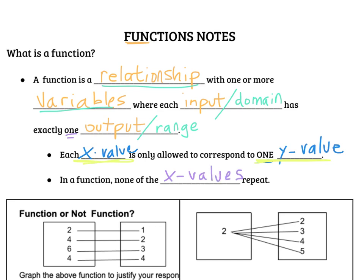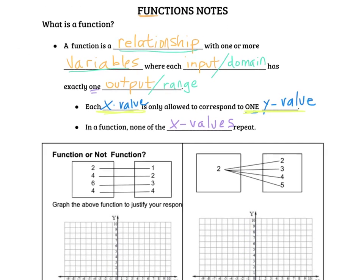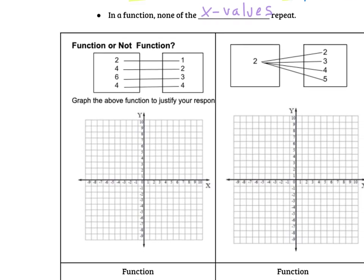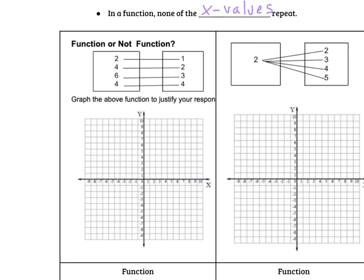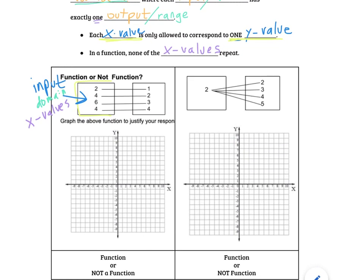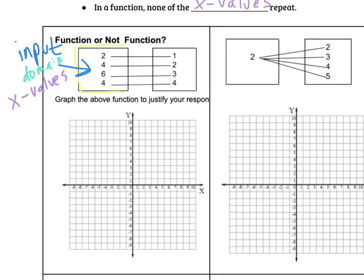Let's see what this looks like. So what you're seeing here is called a mapping diagram. So our first set of numbers, our first box, that's the input. Our input is also known as the domain and it's also known as our x values. According to our definition above, in a function, none of the x values can repeat. So if we're looking here, did you notice that the 4 is repeating? So that must mean that this is not a function.